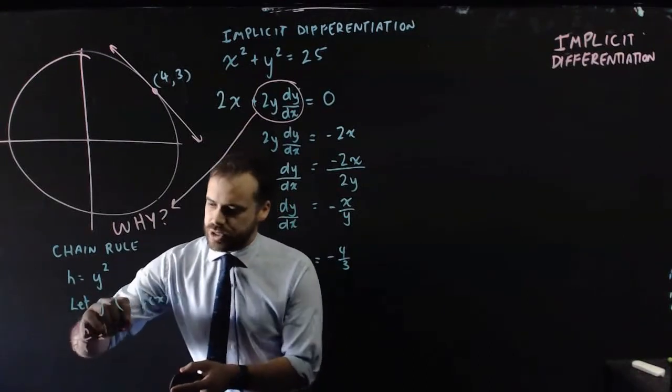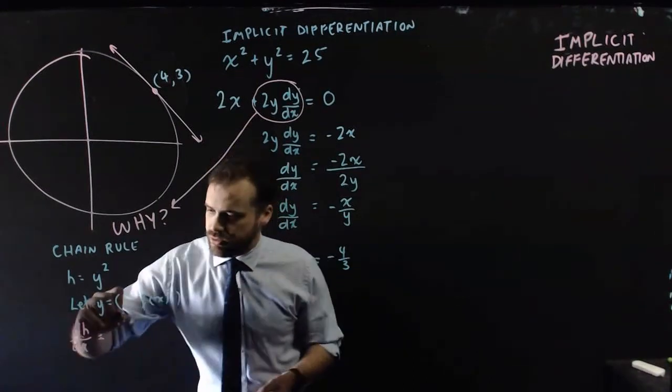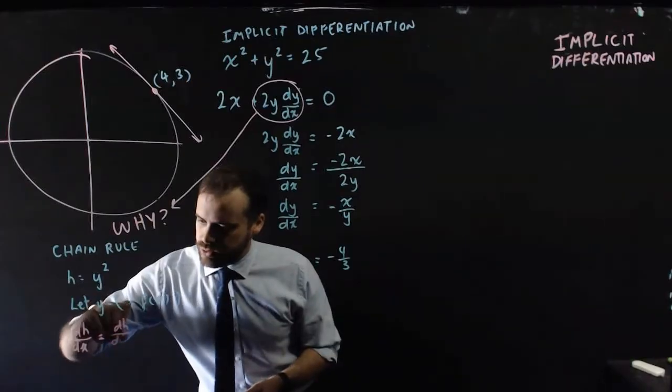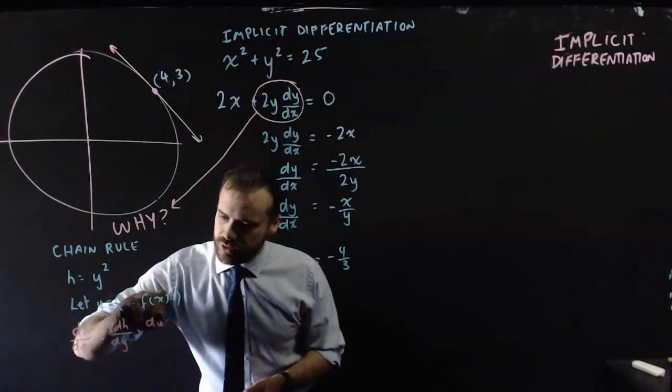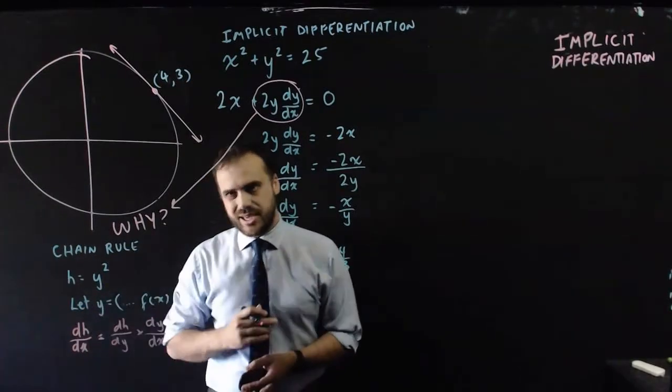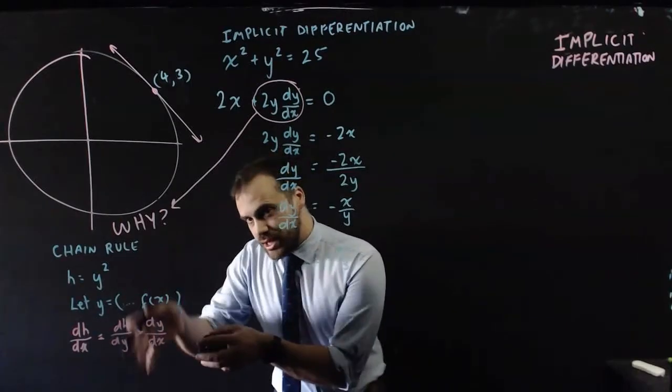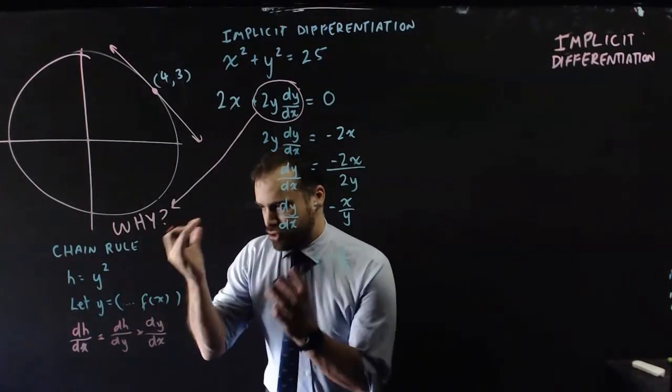we can say that the derivative of h with respect to x using the chain rule is the derivative of h with respect to y times the derivative of y with respect to x. Now,